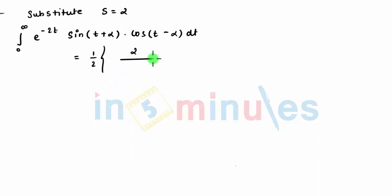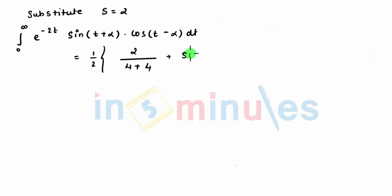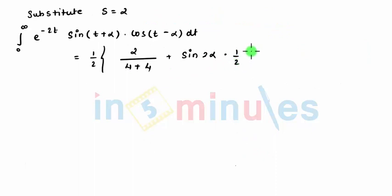So 2 divided by s square plus 4 plus sin 2 alpha into 1 by s, into 1 by 2.